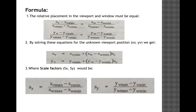Similarly, the same equation applies for the y coordinate system. By solving these two equations, we get xv = xv_min + (xw - xw_min) * sx, and similarly for yv, where sx and sy are the scaling factors whose values are given below.